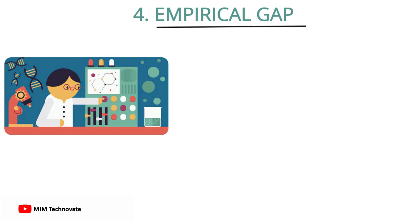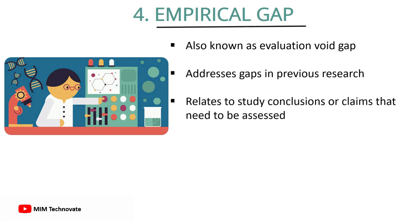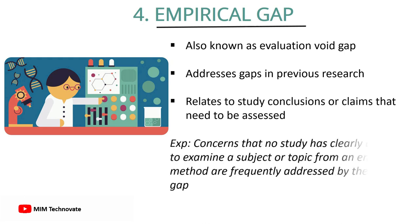Empirical gap, also known as evaluation void gap, addresses gaps in previous research. This gap relates to study conclusions or claims that need to be assessed or experimentally confirmed. For example, concerns that no study has clearly attempted to examine a subject or topic from an empirical method are frequently addressed by the empirical gap.